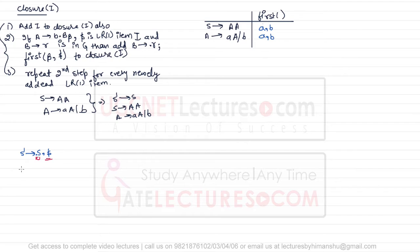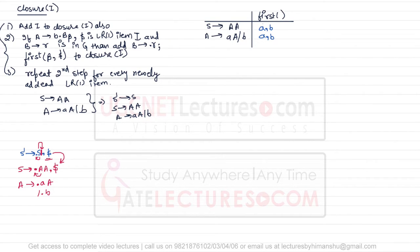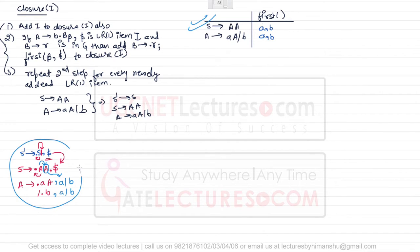Because the dot is before S, we write all productions of S with dot in the beginning: S derives dot AA. The lookahead symbol — since after this S there are no more variables, the same lookahead dollar is copied here. Because there's a dot before A, we write all productions of A with dot in the beginning: A derives dot AA slash dot B. After this A there is variable A, so FIRST of A — which is {a, b} — becomes the lookahead symbol. This gives us the complete first state I₀ for our DFA.